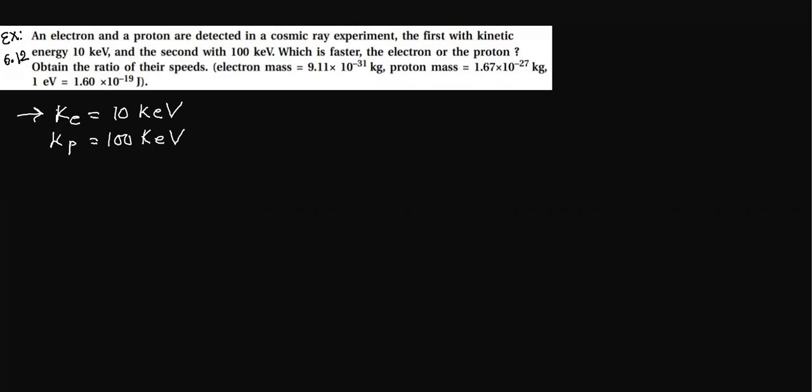Which speed is more? You have to find and obtain the ratio of their speeds. We will find the ratio VE upon VP, electron's speed upon proton's speed.